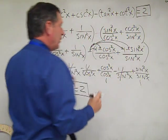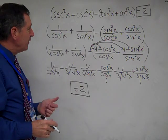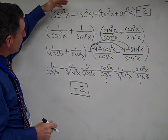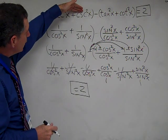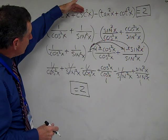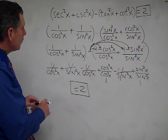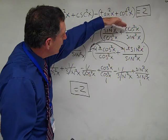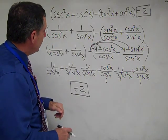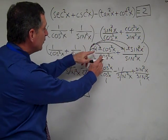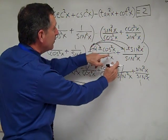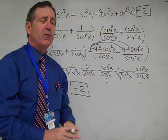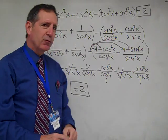To recap: we used the reciprocal identities to change secant into 1 over cosine and cosecant into 1 over sine. We used the tangent and cotangent identities to express those in terms of sine and cosine. Then we used the Pythagorean identity to substitute and simplified everything down to 2. I hope this has been instructive for you. Thanks.